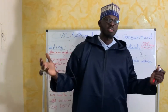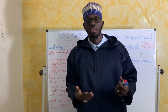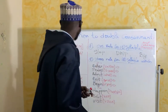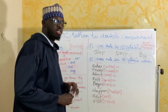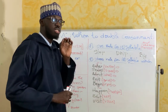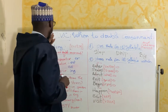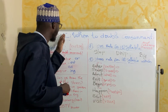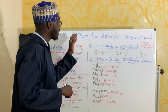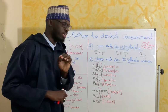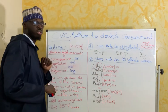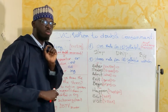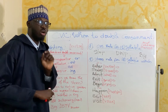Today we're going to learn the CVC rule. C stands for consonant, V for vowel, C for consonant. We're going to learn how not to make a mistake while writing some words.